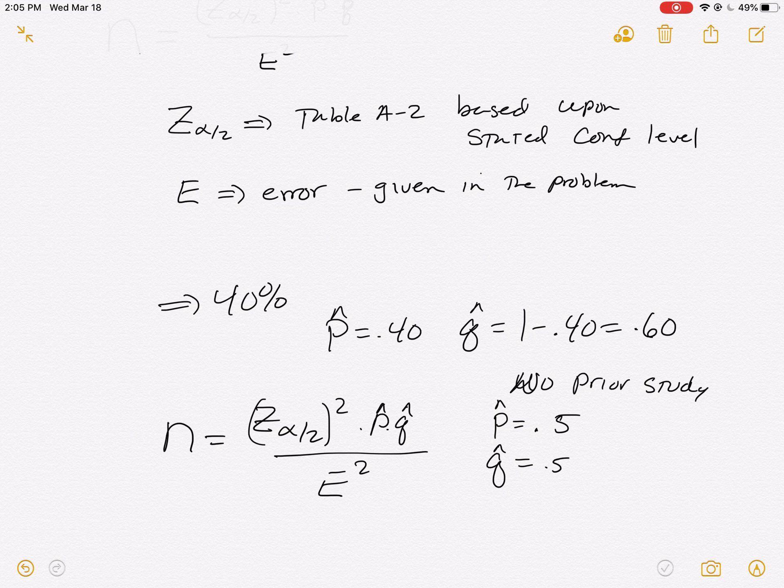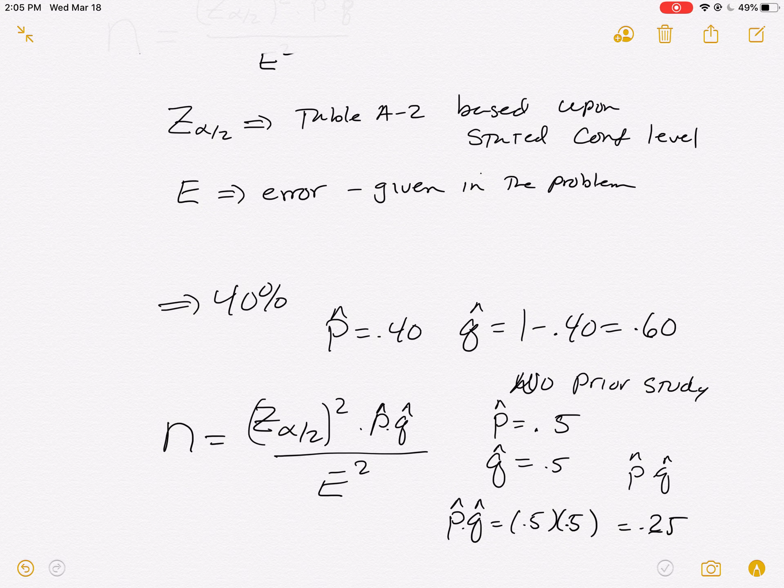0.5 times 0.5 is the biggest p hat times q hat can ever be. And so therefore you're going to talk to the most amount of people. So they're good with that. It's kind of the worst case scenario. So if no prior study is referred to, they're going to use 0.5 times 0.5. Or some books will say that p hat times q hat would be 0.5 times 0.5. And they'll skip that and go straight to the fact that it's 0.25 and tell you to throw it in there.